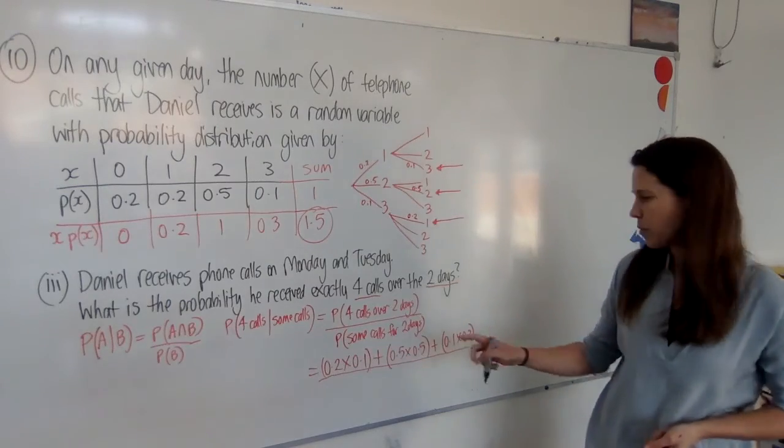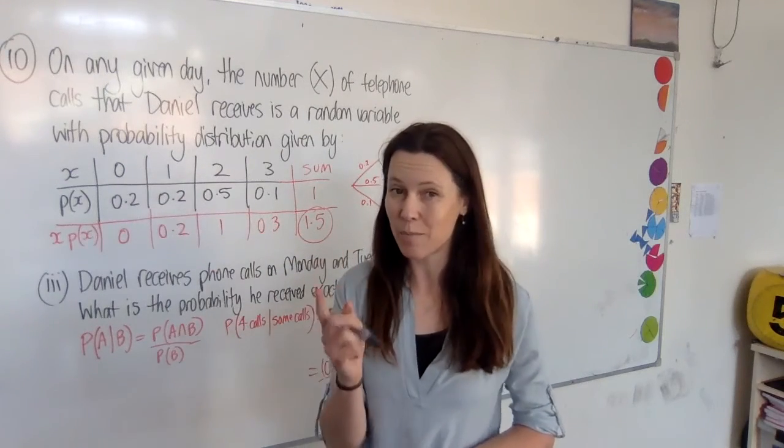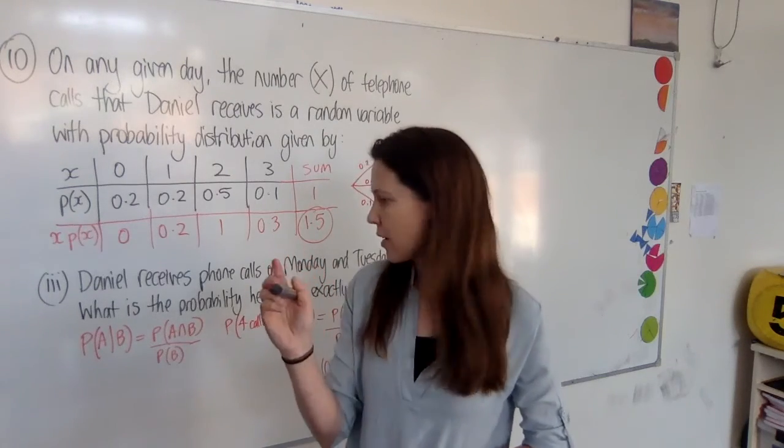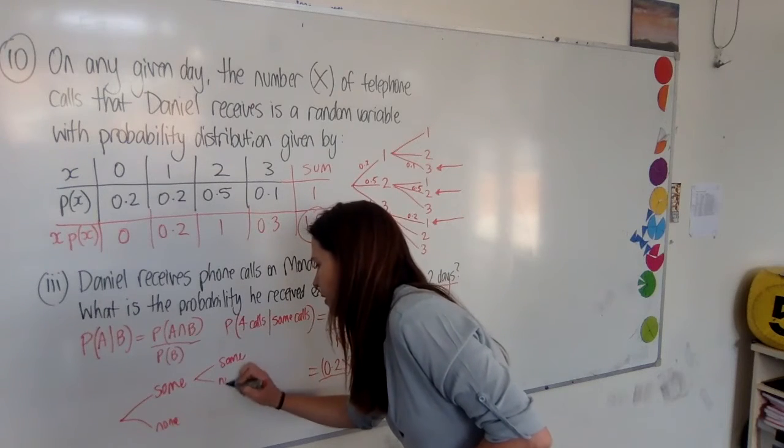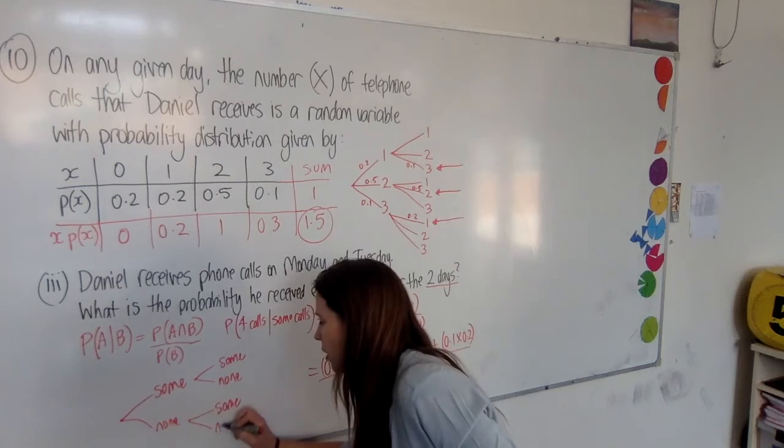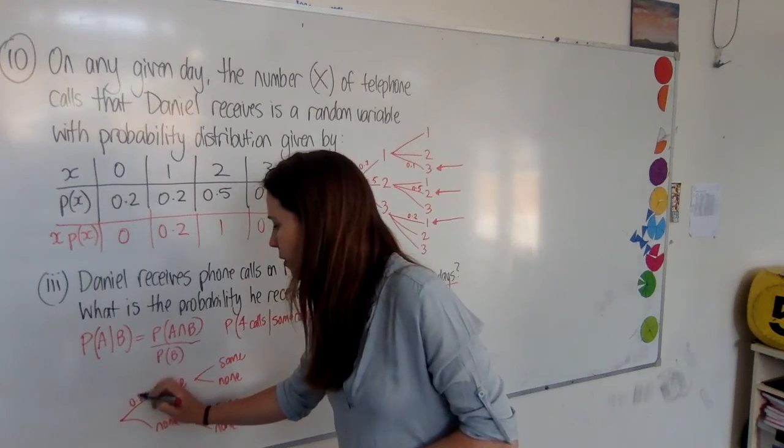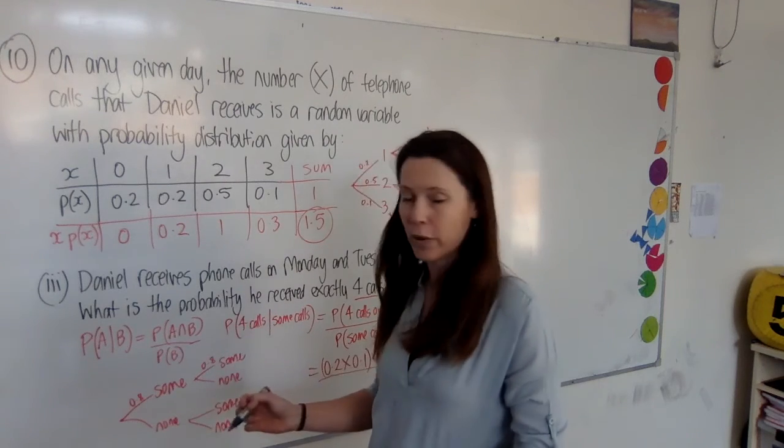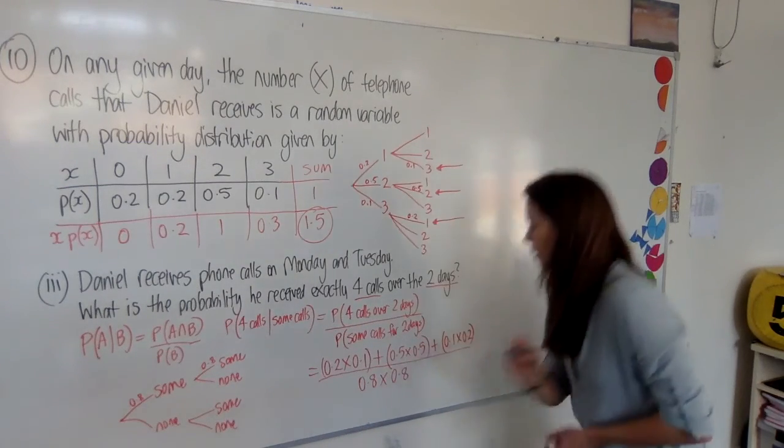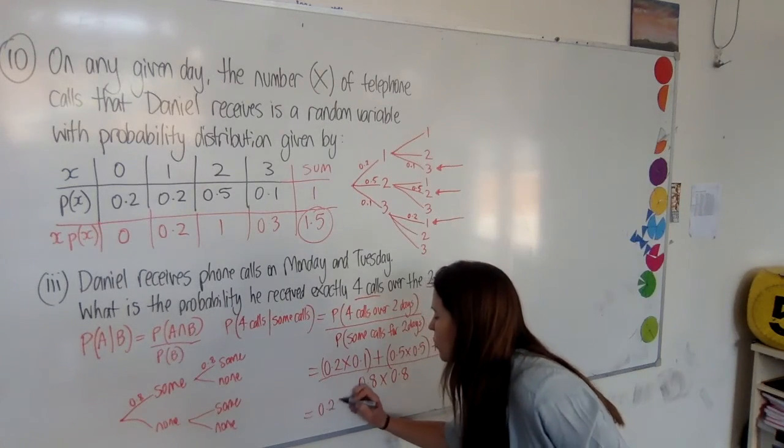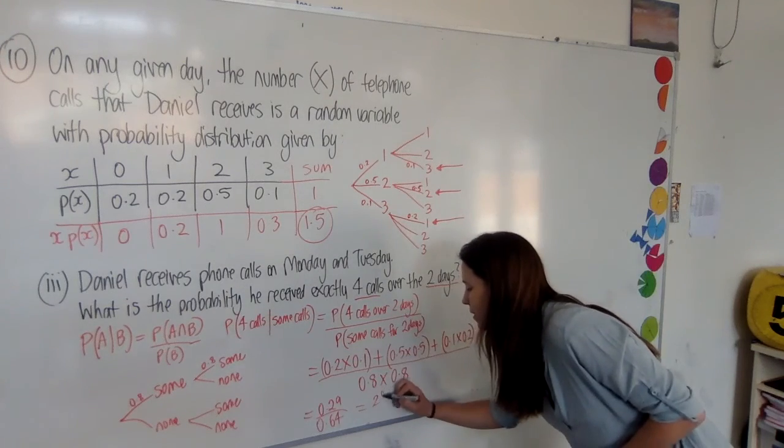Now all of that needs to be over the probability of getting some calls on those two days. Now let's have a think. The chances of getting no calls at all is 0.2. So the chance of getting some calls is 0.8. Now a separate tree diagram might help you think this through. First day, some, none, some, none, some, and none. Now a lot of people will just think this through in their head without actually drawing it up. But this is what we need to be thinking through. To think, well the chance of getting some calls is 0.8 the first day. And the chance of getting some calls the second day is also 0.8. So we need 0.8 times 0.8 on the bottom of our fraction. Throw all of that into your calculator and what you should get is 0.29 over 0.64. Which when you simplify that fraction should give you 29 over 64. And that's the answer.